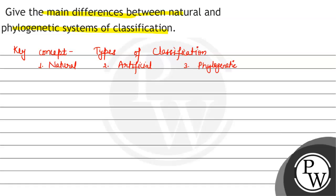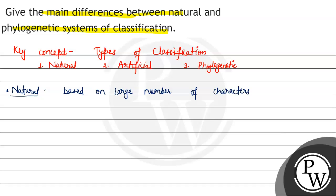Now let's talk about natural classification. The natural system of classification was based on a large number of characters. The characters included morphology — meaning external appearance — and anatomy.